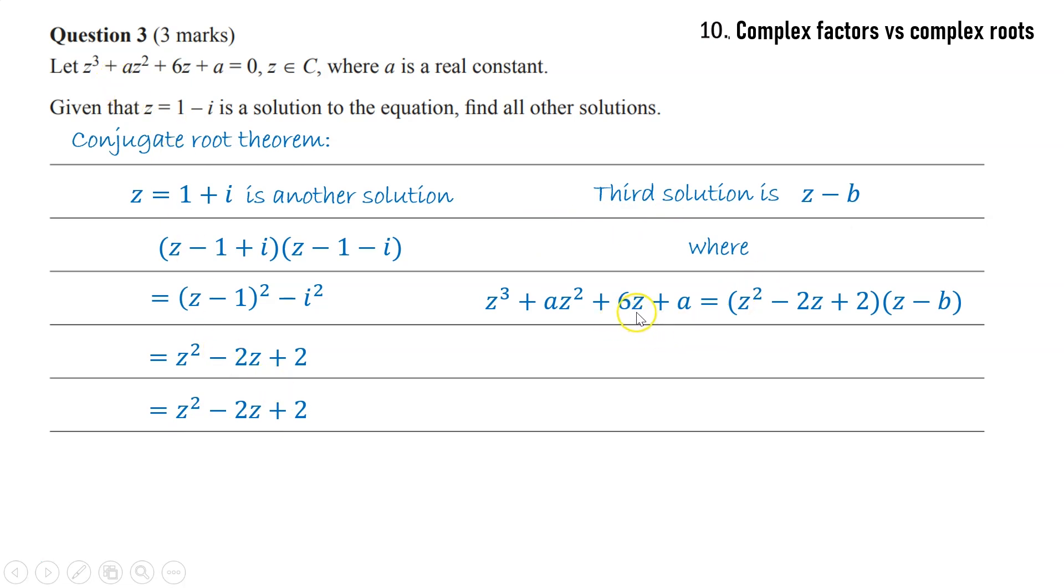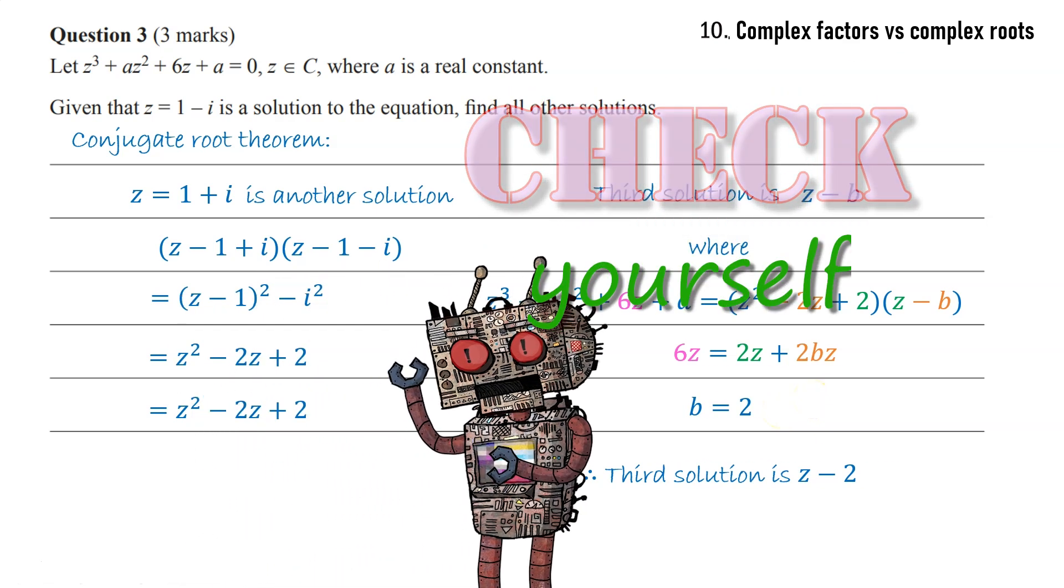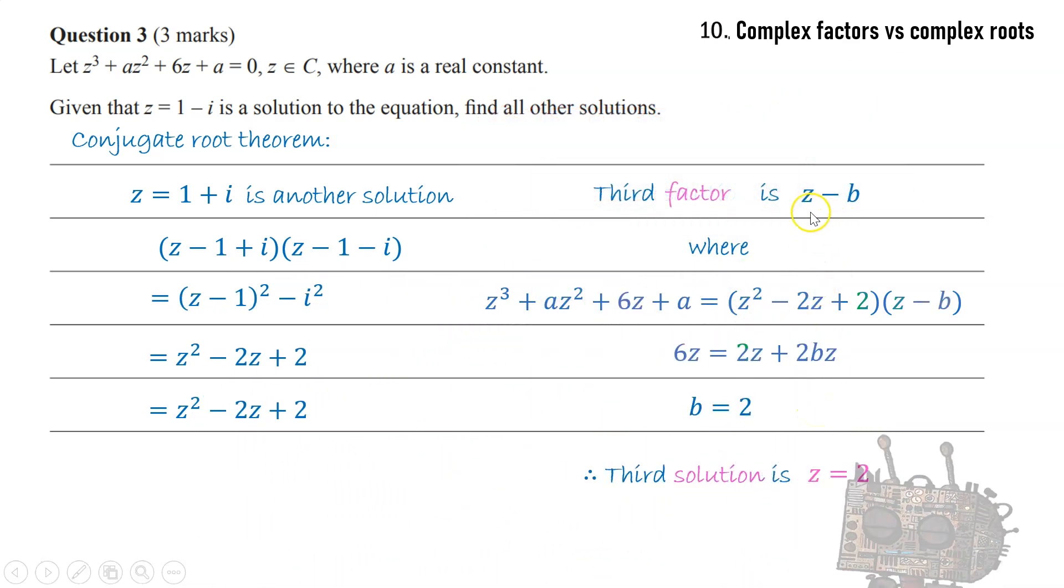There's a few ways you could work that out, but one way is to use that 6z term to solve for the value of b. We can work out that b must be 2. So you might say the third solution is z minus 2.